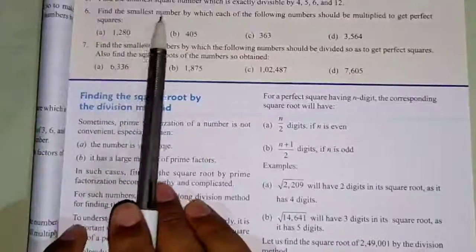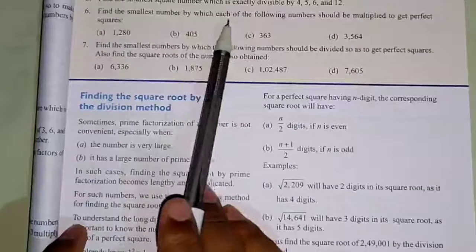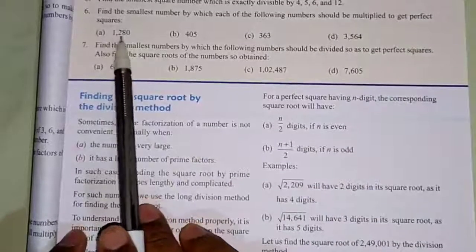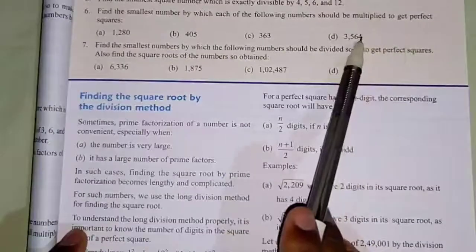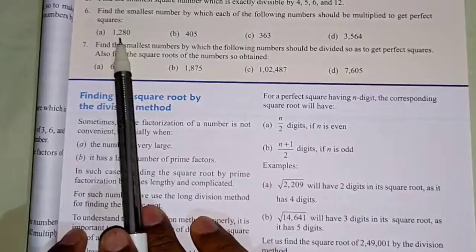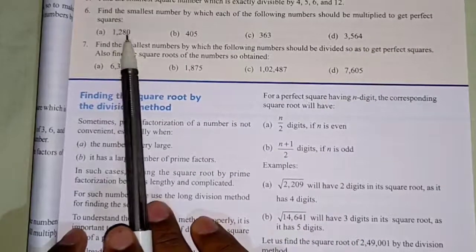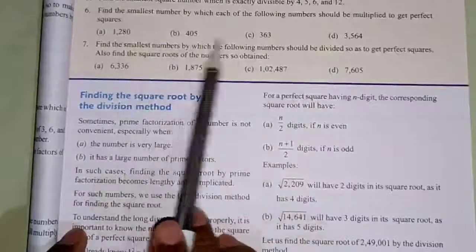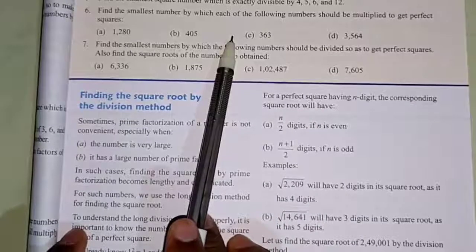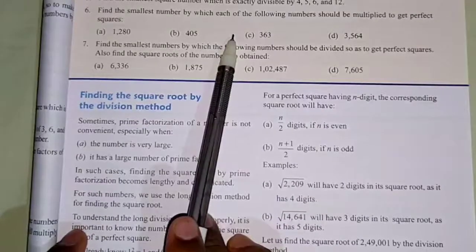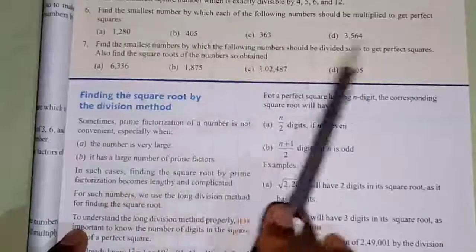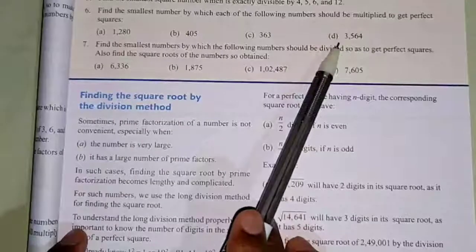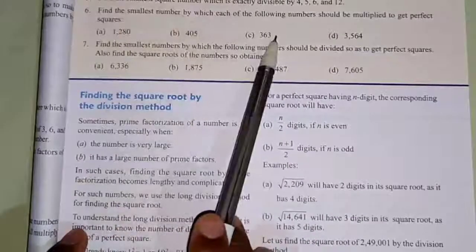Question number 6: find the smallest number by which each of the following numbers should be multiplied to get a perfect square. For questions a, b, c you have to do it yourself. I am doing question number d.